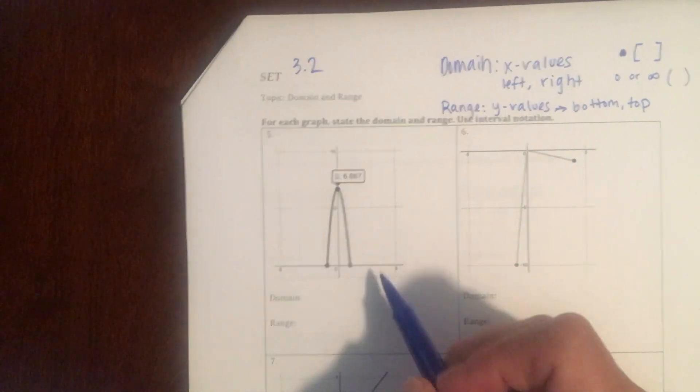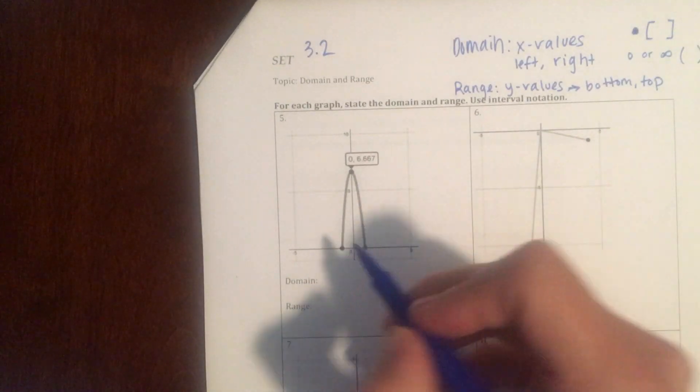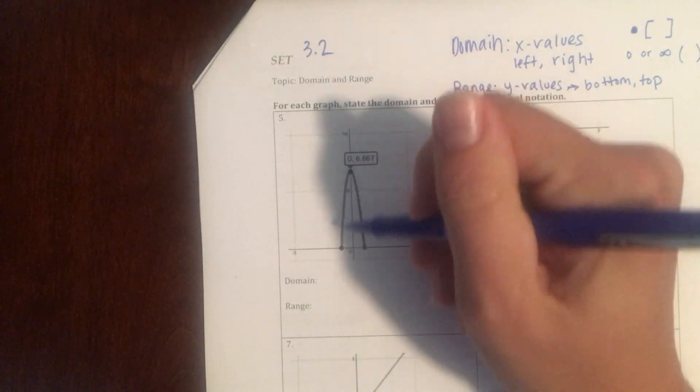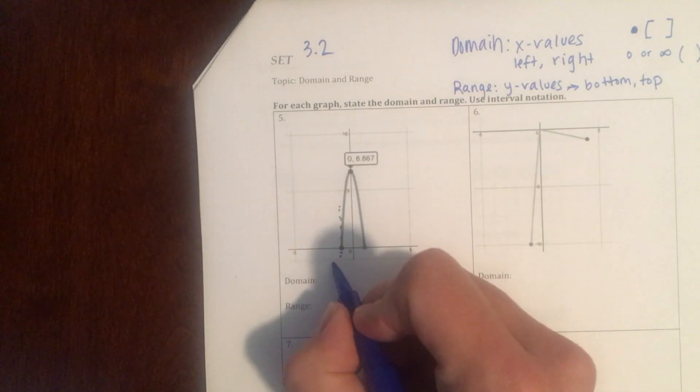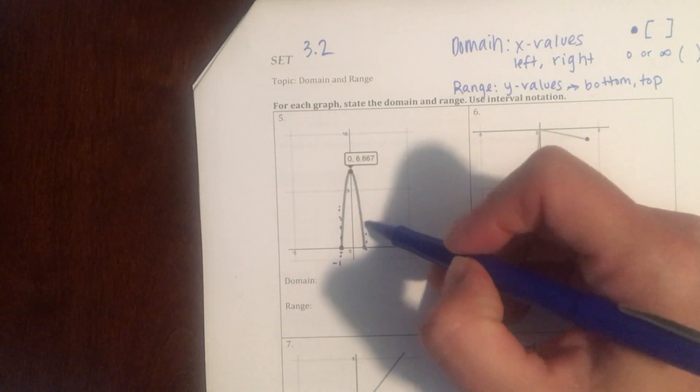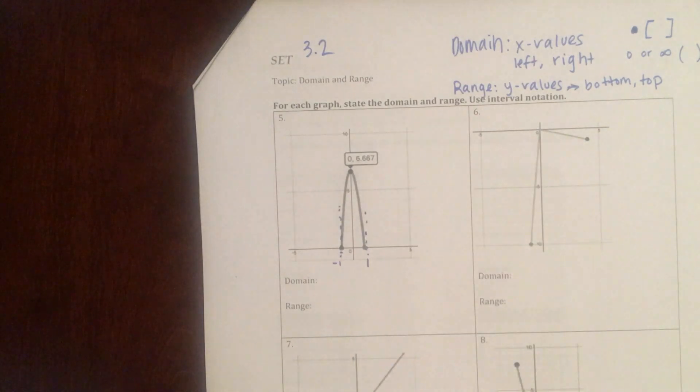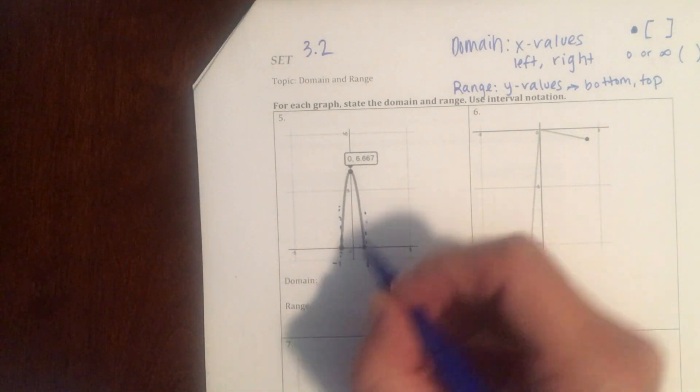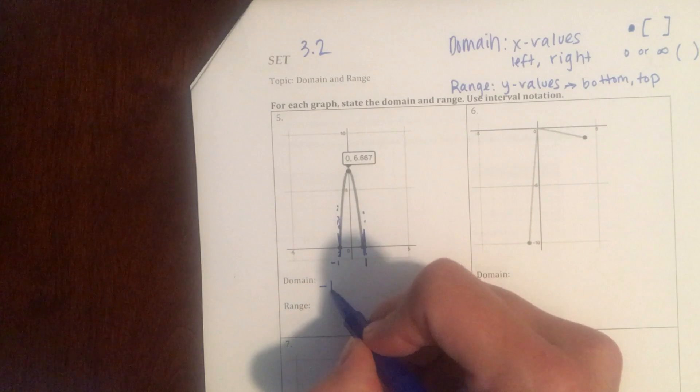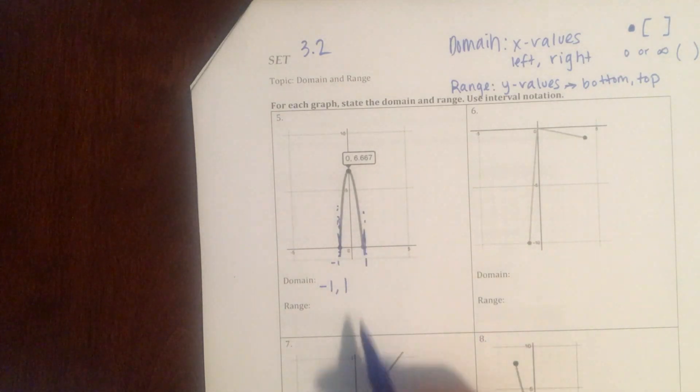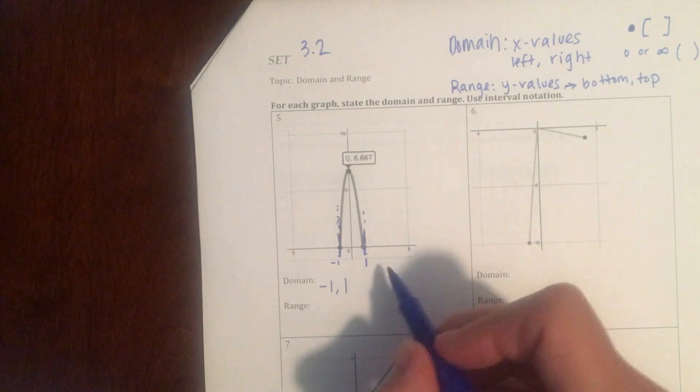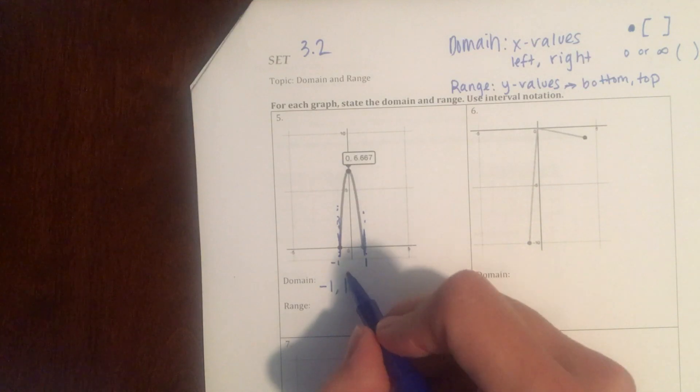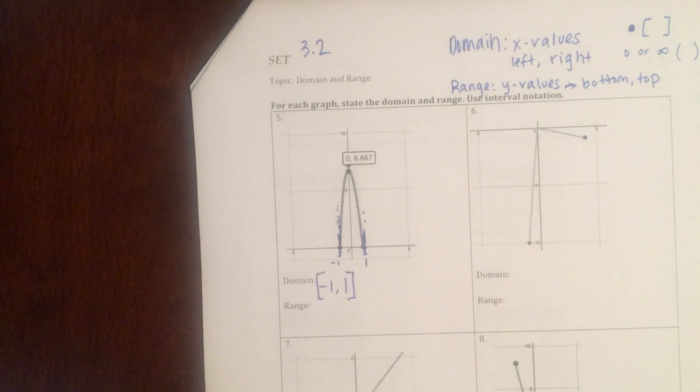So here's our first graph. We want to find out how far right and left the graph goes. So here's the edge of it left, where x equals negative 1, and then the edge of that right is positive 1. So that's my domain. Negative 1, comma, positive 1. That's how far left the graph goes and how far right. So our graph is the interval in between negative 1 and 1. Since those are closed dots, we use brackets.